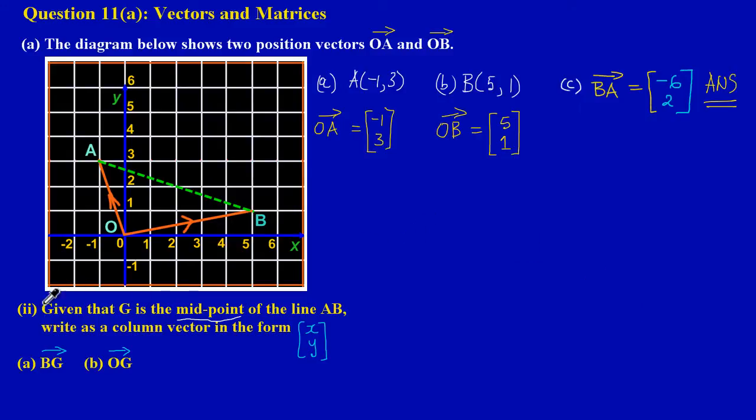Here they're stating in part 2, my friends: given that G is the midpoint of the line AB, write as a column vector in the form [x, y]: part a, BG, and part B, OG.